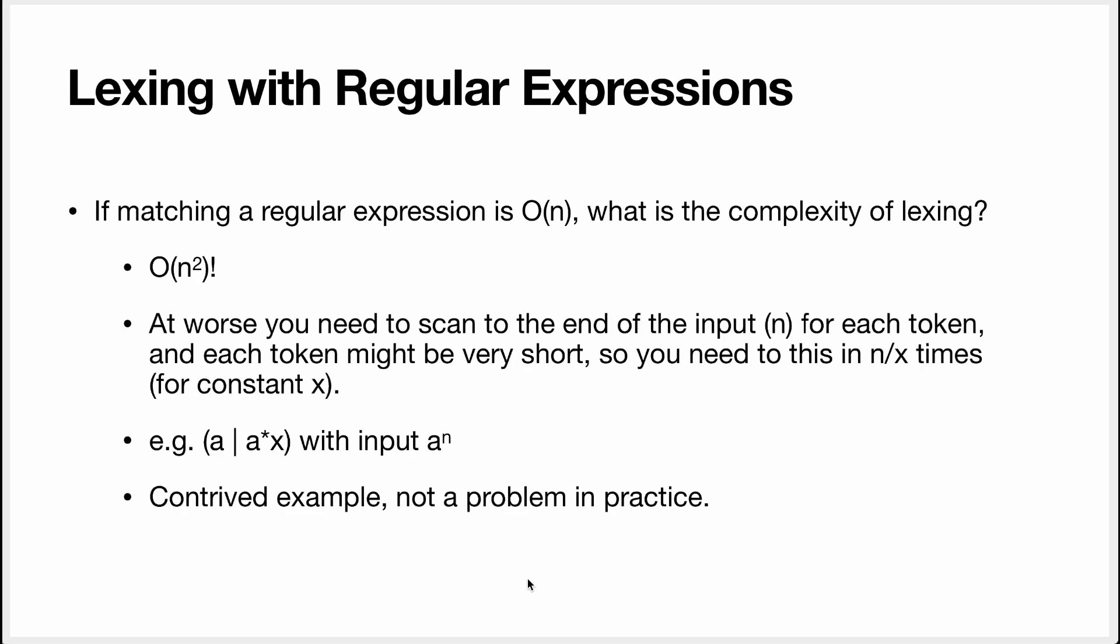So the answer is theoretically O(n²). Because in the worst case, you have very short tokens, but you need to look at the whole input to decide that the token that you want is actually very short.